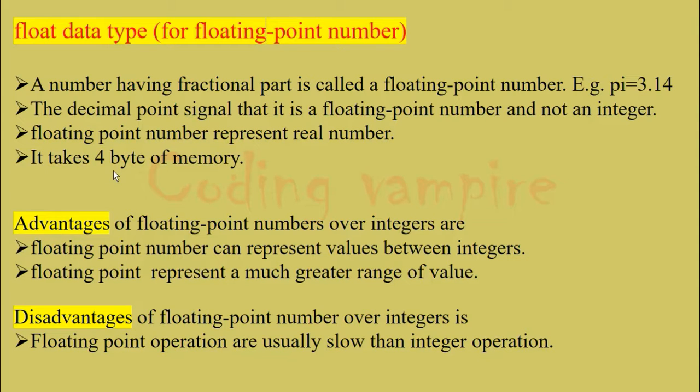So obviously the range of floating point numbers will be greater than that of integers. Advantages of floating point numbers over integers are: floating point numbers can represent values between integers. So integer data type cannot represent 1.1, but floating point can represent 1.1. Floating point represents a much greater range of values because the memory occupied by floating point numbers is greater than that of integers. Disadvantages of floating point numbers over integers: floating point operations are usually slower than integer operations.